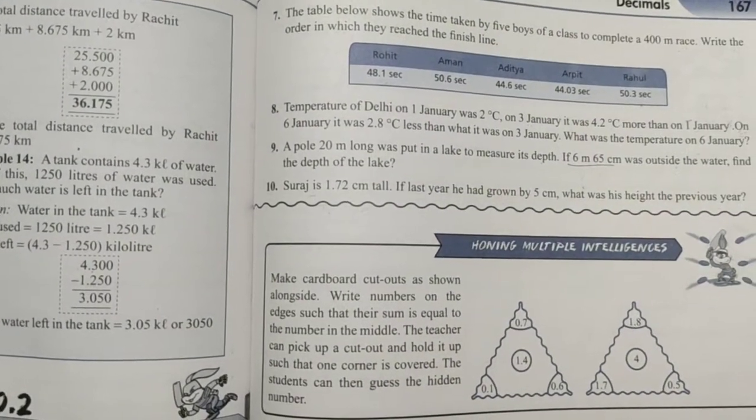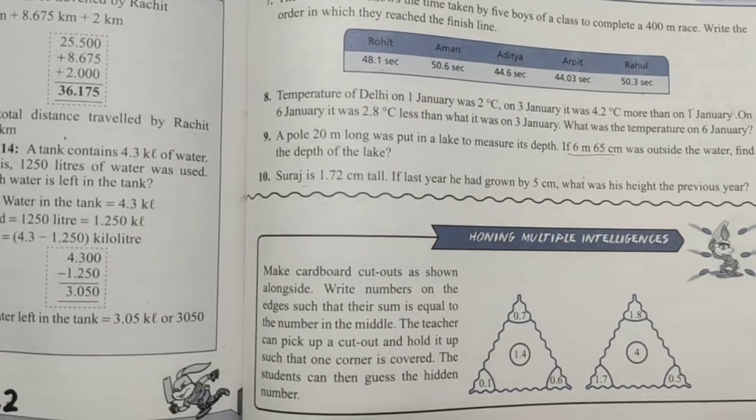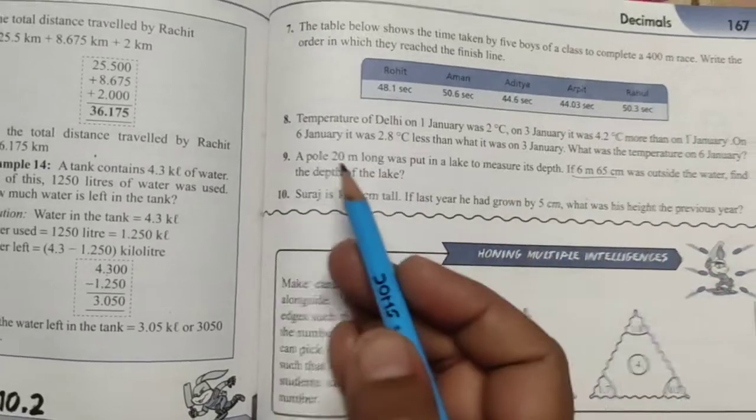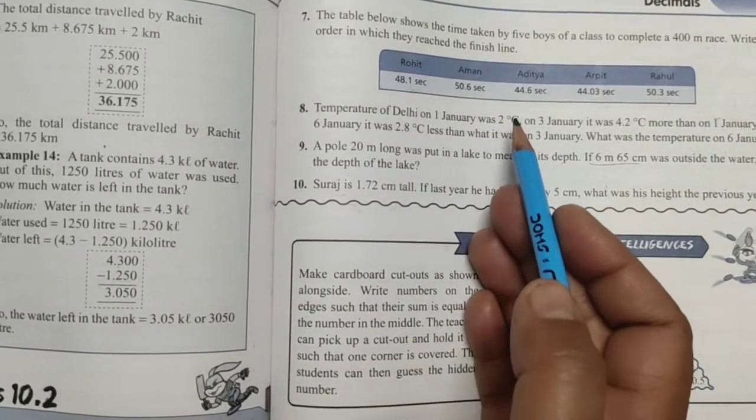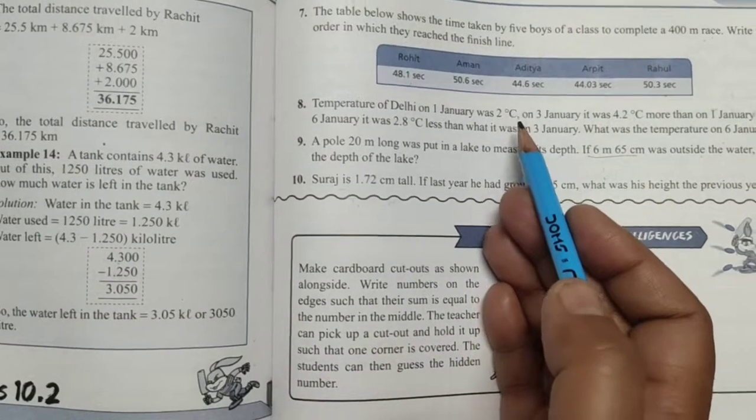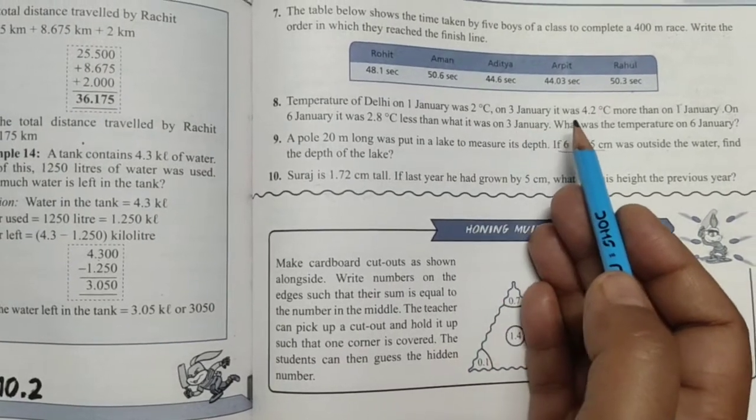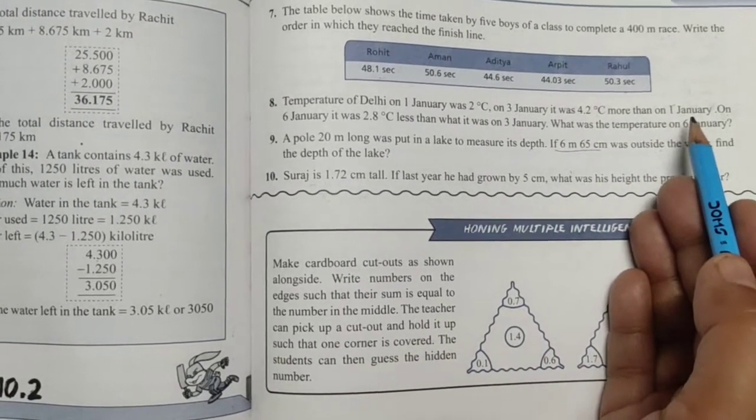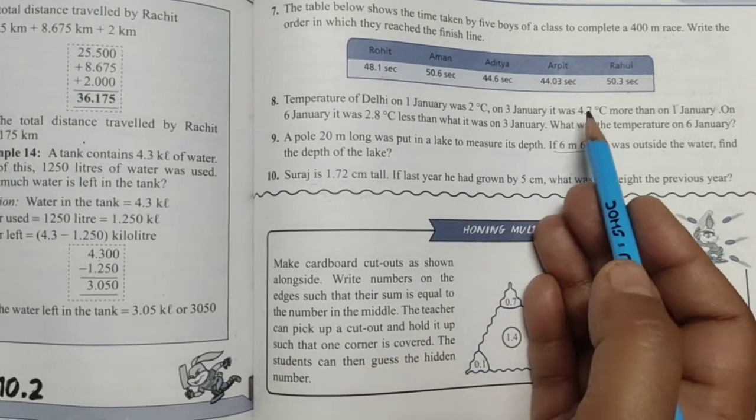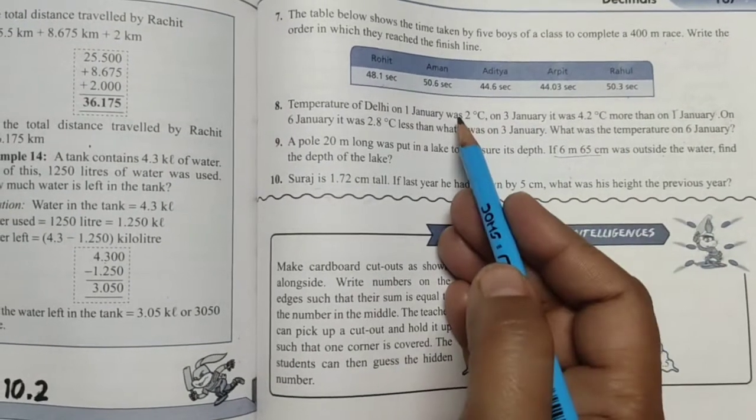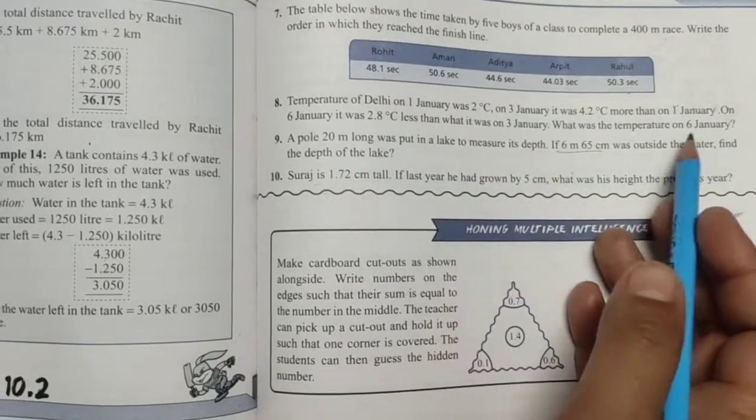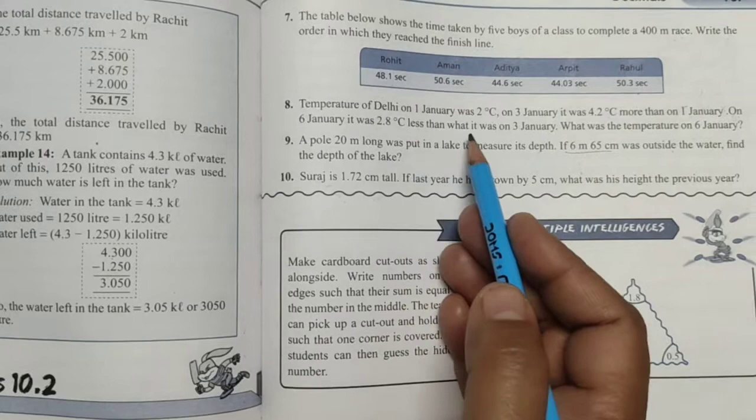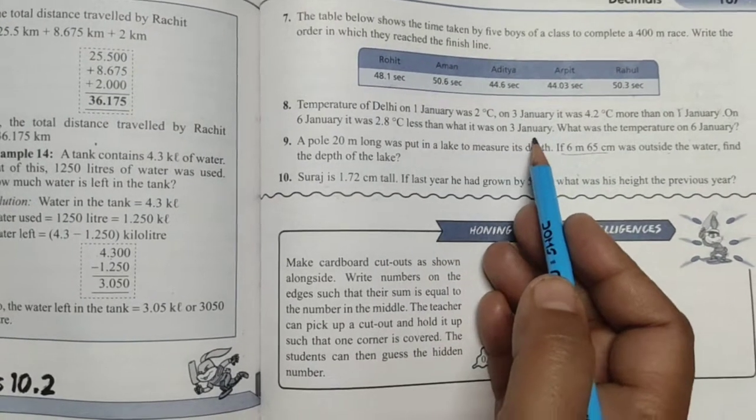Now, question number 8. Temperature of Delhi on 1st January was 2 degrees Celsius. Delhi ka 1st January ko temperature 2 degrees Celsius tha. C stands for Celsius. On 3rd January, it was 4.2 degrees Celsius more than on 1st January.